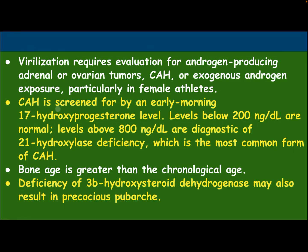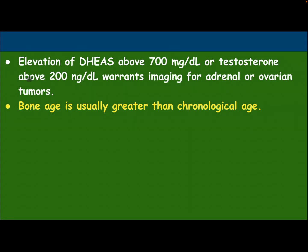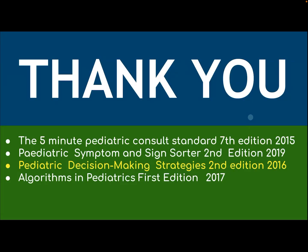Congenital adrenal hyperplasia is screened by an early morning 17-hydroxyprogesterone level. Levels below 200 nanograms per deciliter are normal; levels above 800 are diagnostic of 21-hydroxylase deficiency, the most common form of congenital adrenal hyperplasia, and bone age is greater than chronological age. Deficiency of 3-beta-hydroxysteroid dehydrogenase may also result in precocious pubarche. Elevation of DHEAS above 700 or testosterone above 200 warrants imaging for adrenal or ovarian tumors, with bone age usually greater than chronological age. Thank you for listening.